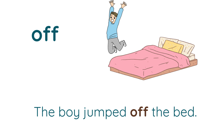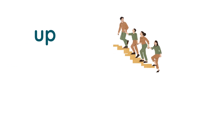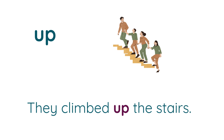Preposition no. 3 is 'up'. See the example: They climbed up the stairs. Up means mele noki — upward direction — and it is used in related meanings. They climbed up the stairs. The monkey climbed up the tree.